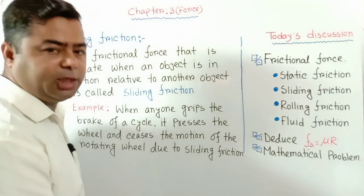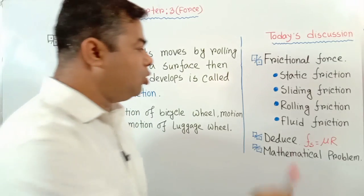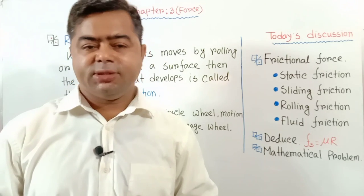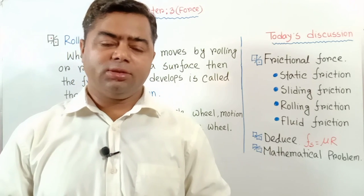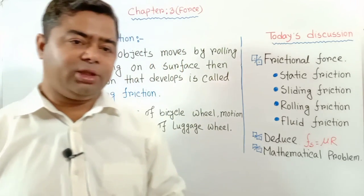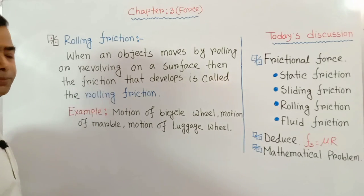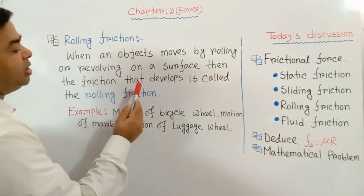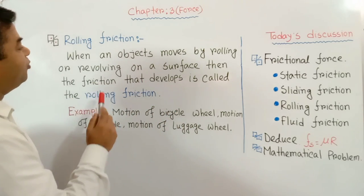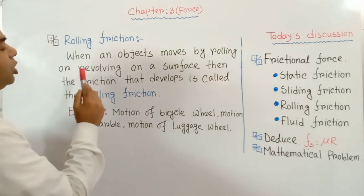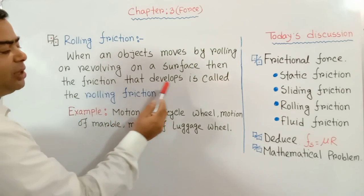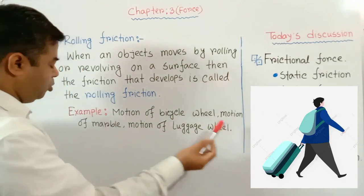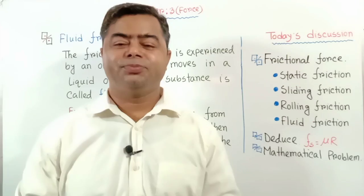Now we discuss about rolling friction. When a marble moves on a surface, after some time the marble will stop because there is a friction acting on it — this friction is called rolling friction. When an object moves by rolling or revolving on a surface, the friction that develops is called rolling friction. Examples: motion of a bicycle wheel, motion of a marble, motion of luggage wheels.